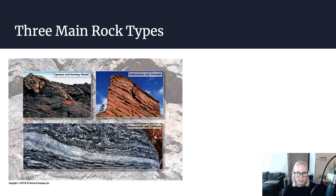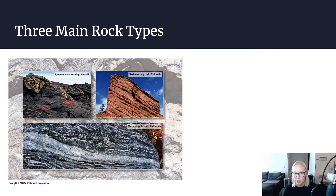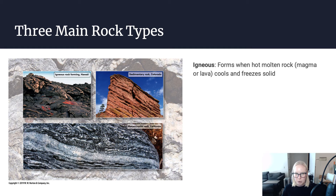Let's talk about the three main rock types. These might be things you're already familiar with from a previous class, but let's review them quickly. The three main rock types you're going to encounter out in the world are igneous rocks, sedimentary rocks, and metamorphic rocks. Igneous rocks, which we'll cover in more detail in another video, form when hot molten rock — either magma or lava — cools and freezes solid.